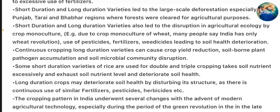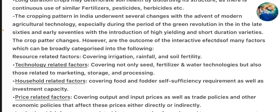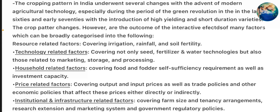The cropping pattern in India underwent several changes with the advent of modern agriculture technology, especially during the period of the Green Revolution in the late 1960s and early 1970s with the introduction of high yielding and short duration varieties. The crop pattern changes are the outcome of the interaction of many factors broadly categorized as follows: (1) Resource-related factors covering irrigation, rainfall, and soil fertility.